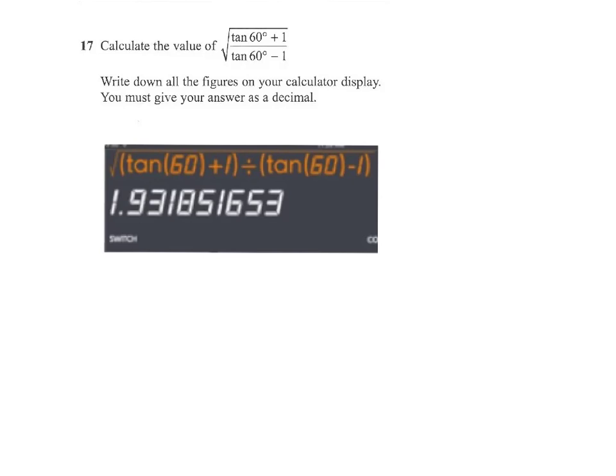Let me make these steps clear. It's the square root of, and the brackets for the division, then tan, and then make sure you use brackets to get tan 60. Work out that value first, and then add on 1. Close brackets, so that's our numerator.